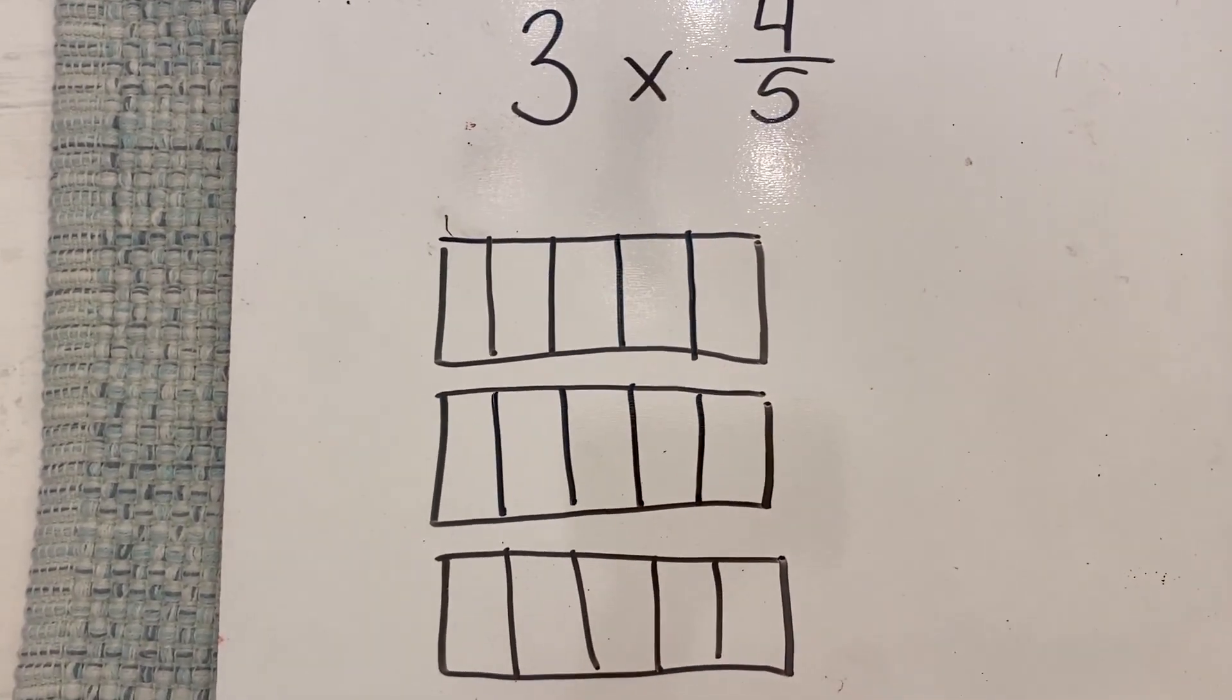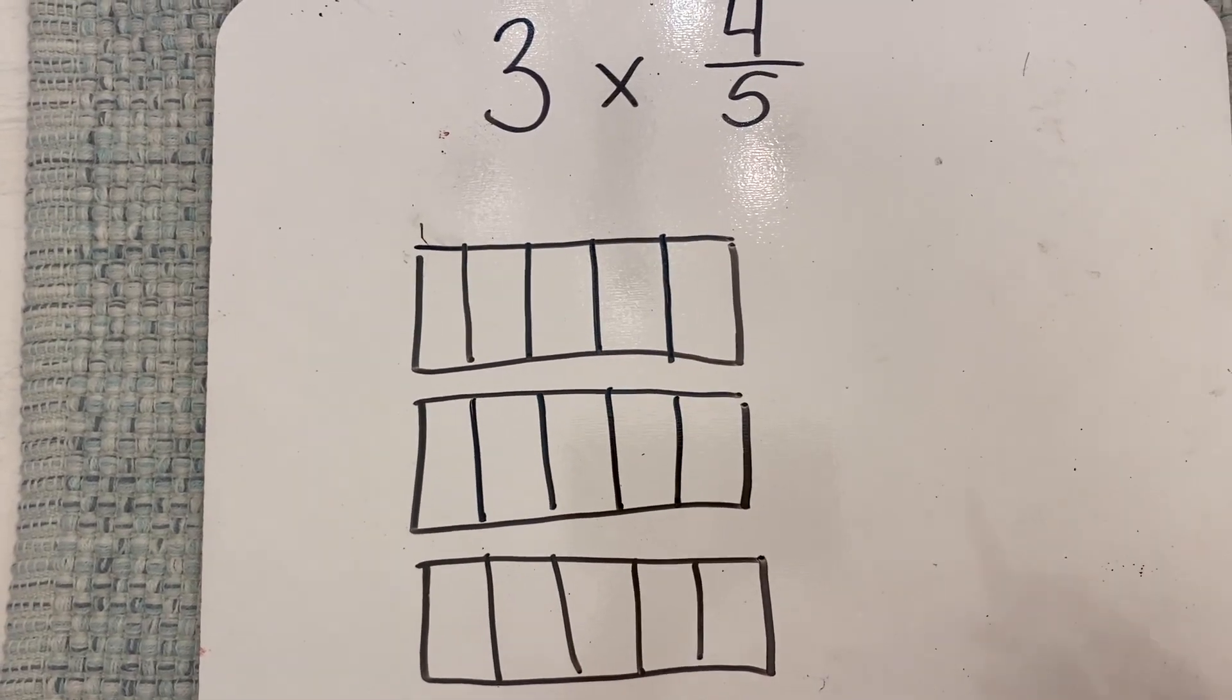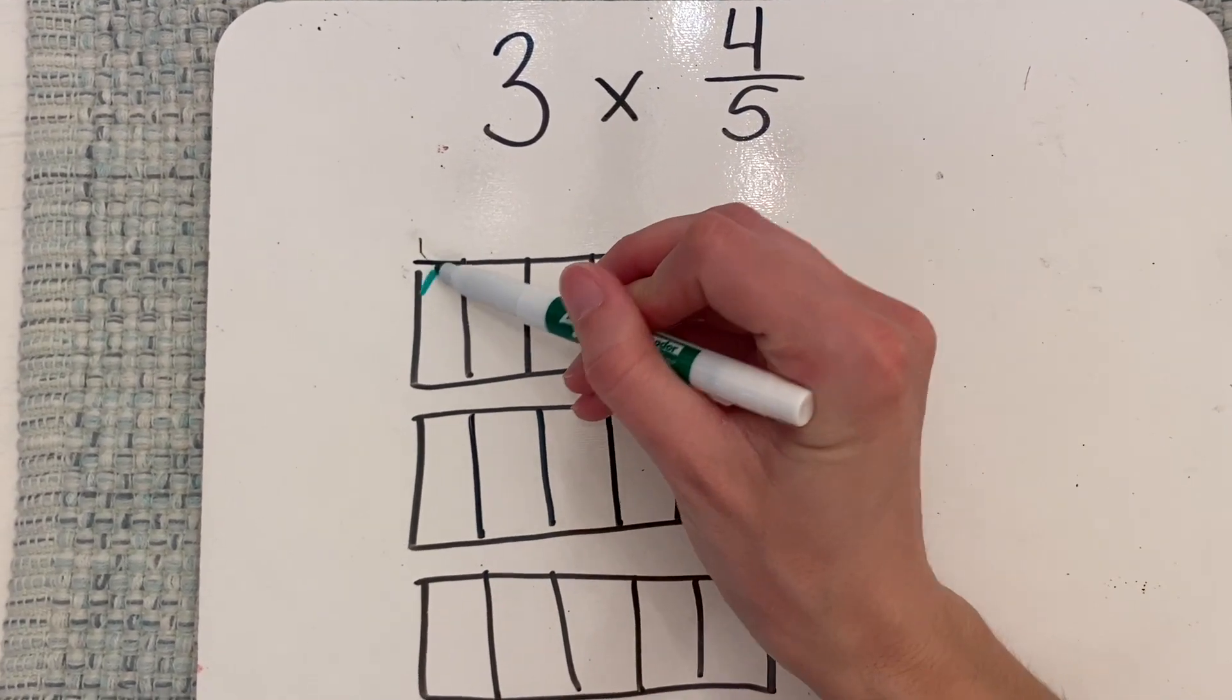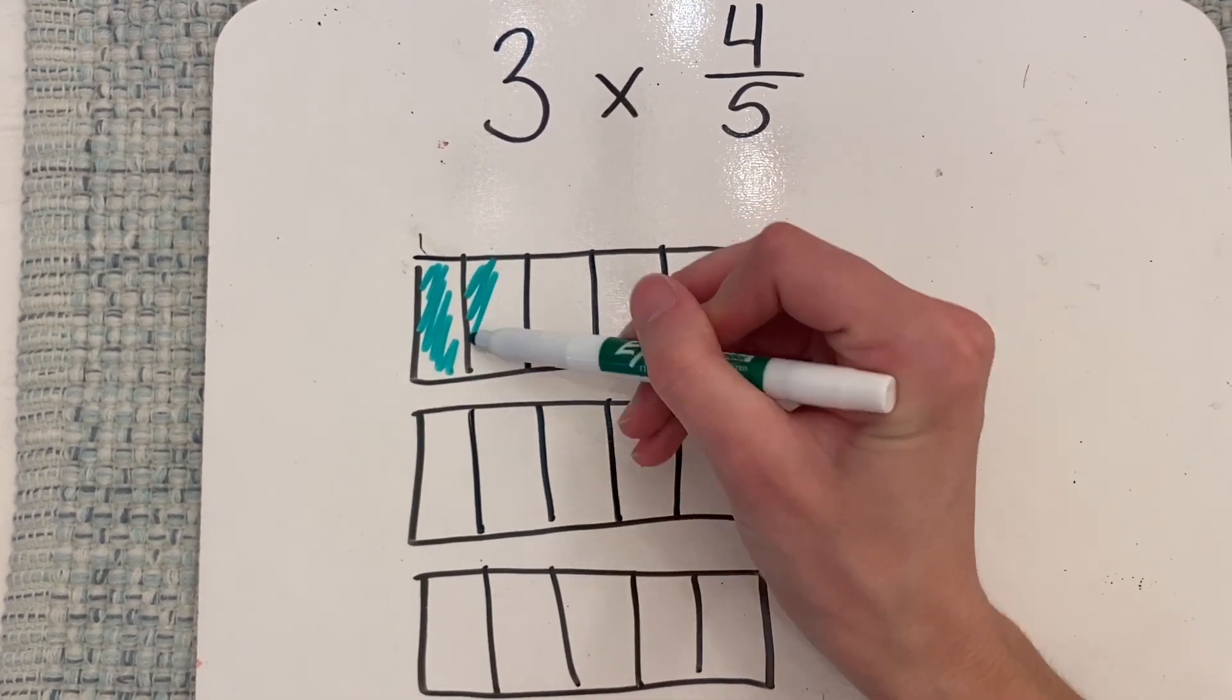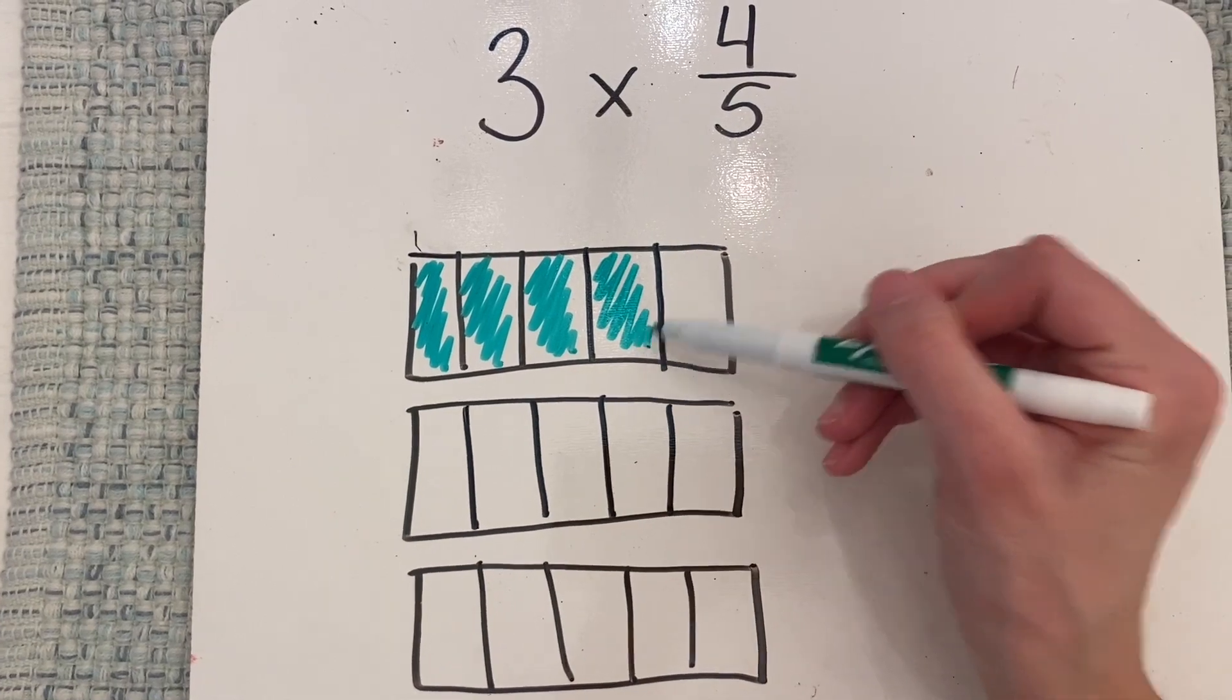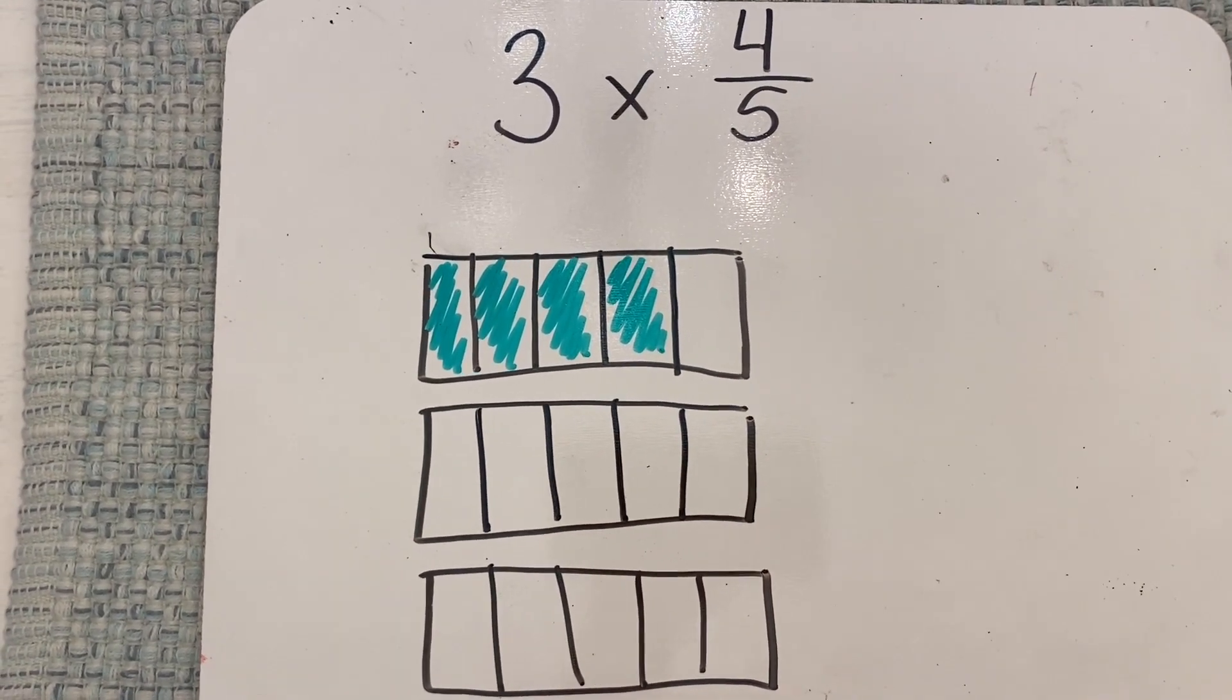Then we're going to take one color and shade in a group of four-fifths, so our first group. I'm going to shade in one piece, two, three, four. So there's a group of four-fifths.